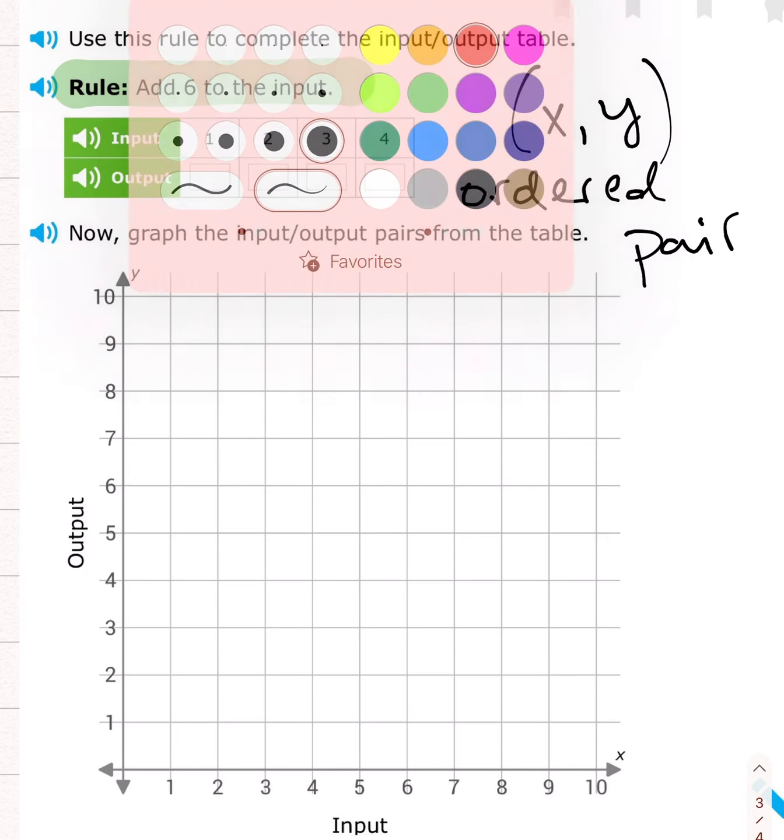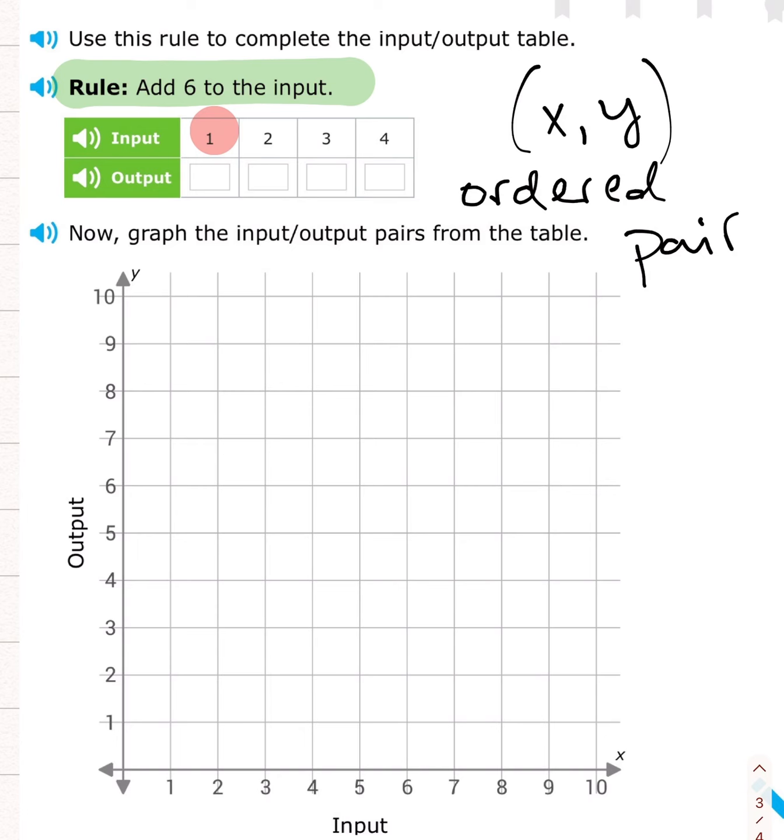So let's take a look at one of the inputs. Here's an input. The input is 1. So the rule here is to add 6. What is 1 plus 6? That's right. It is 7.